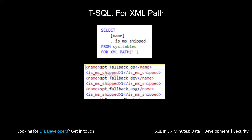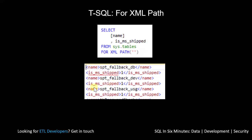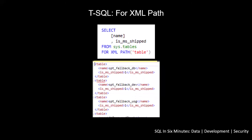We're simply straightforward outputting it. All of you can do this on your database and you'll get a similar result. You'll see the name of the table and is_shipped — that's what you'll see. This can be very useful. This is not the most popular data format that I tend to use, but it is one of the more popular ones involving FOR XML PATH.